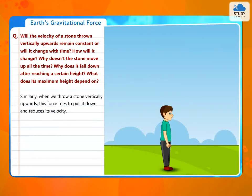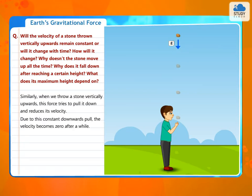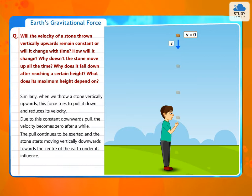Similarly, when we throw a stone vertically upwards, this force tries to pull it down and reduces its velocity. Due to this constant downward pull, the velocity becomes zero after a while. The pull continues to be exerted and the stone starts moving vertically downwards towards the center of the Earth under its influence.